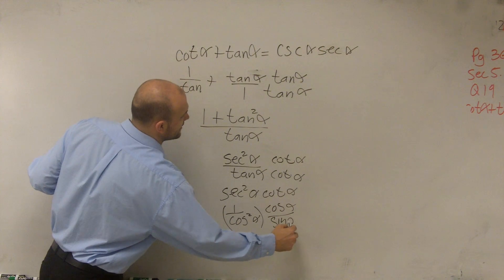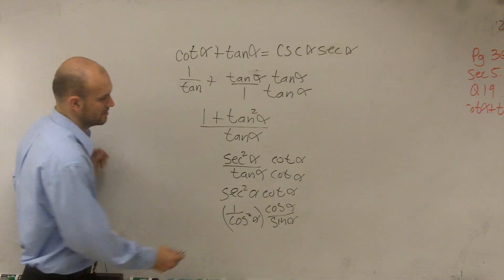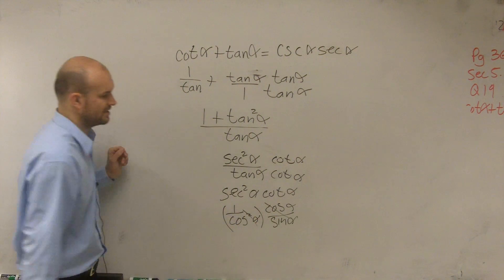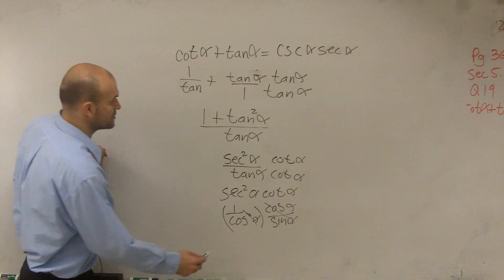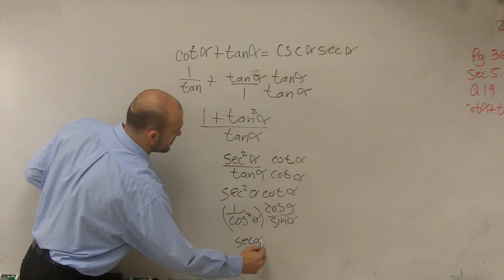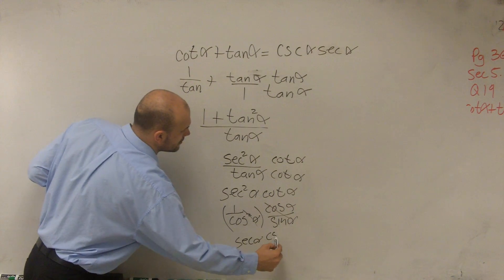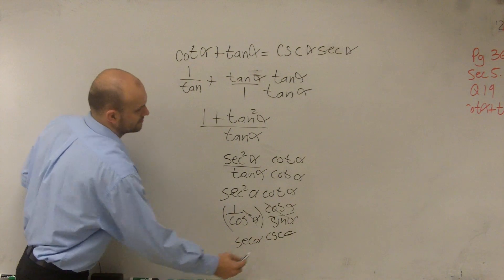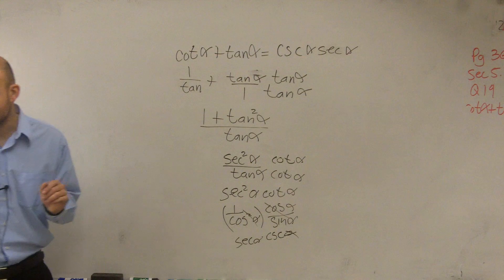Therefore, those can divide out to 1, which is just going to leave you with secant of alpha over cosecant of alpha, which is your exact same answer.